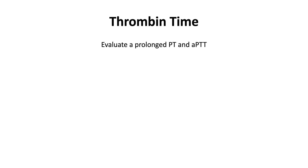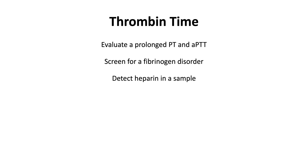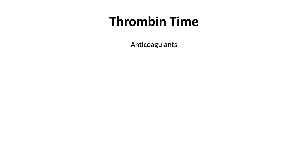The thrombin time is used to evaluate a prolonged PT and APTT, screen for fibrinogen disorder — hypofibrinogenemia or dysfibrinogenemia — and detect heparin in a sample. The thrombin time is prolonged with anticoagulants that inhibit thrombin, like unfractionated heparin and bivalirudin, and disorders of fibrinogen.